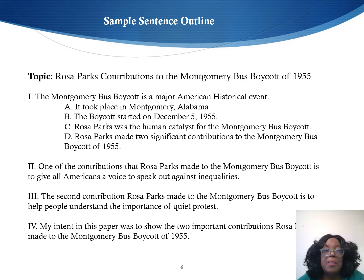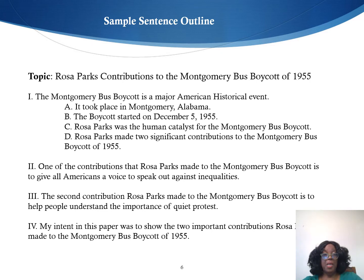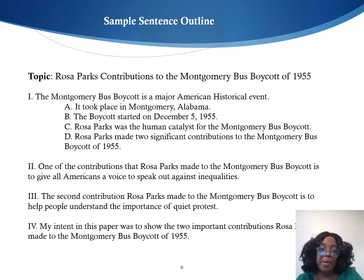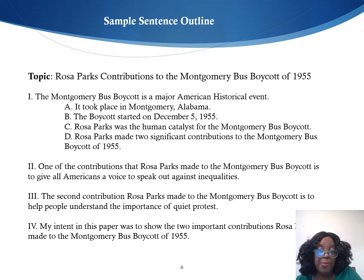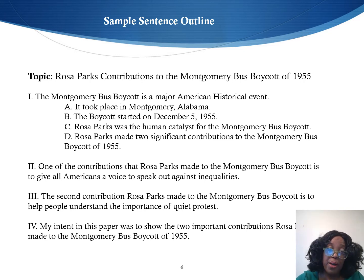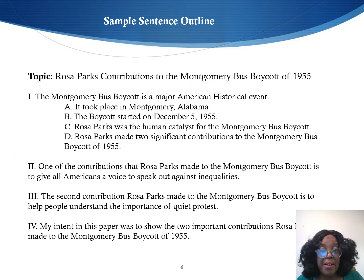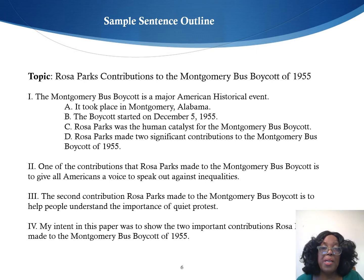My Roman numeral one: The Montgomery Bus Boycott is a major American historical event. I want to tell my reader that it took place in Montgomery, Alabama, and then the day that it started — the boycott started on December 5, 1955. And then I want to move my reader into Rosa Parks. Rosa Parks was the human catalyst for the Montgomery Bus Boycott. And from there, I present my thesis: Rosa Parks made two significant contributions to the Montgomery Bus Boycott of 1955.